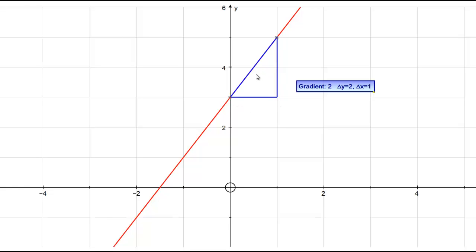And the reason we can define this as a single gradient for the whole straight line is if I change the points I'm looking at, although the actual values for delta y, delta x, the change in y and x change, the gradient stays at a constant of 2.